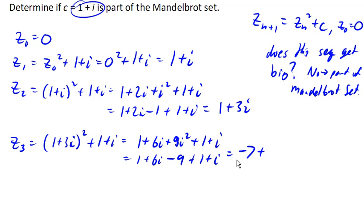You'll notice these values are already getting really big. It turns out that the next one is 1 minus 97i, which is even bigger. So this ends up getting really big, and this point 1 plus i is not in the Mandelbrot set.